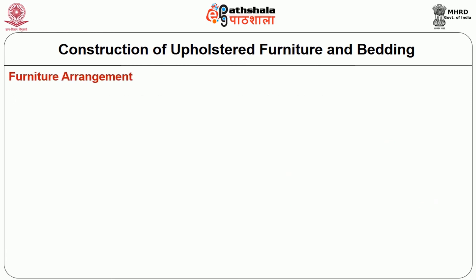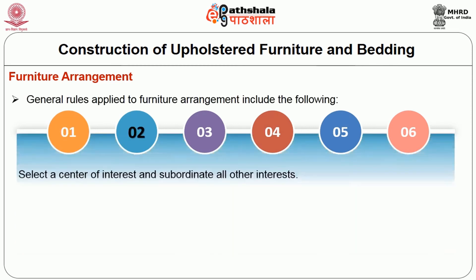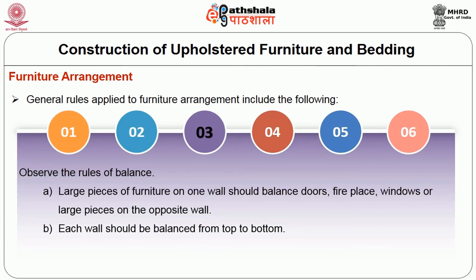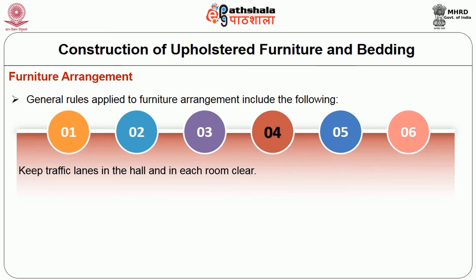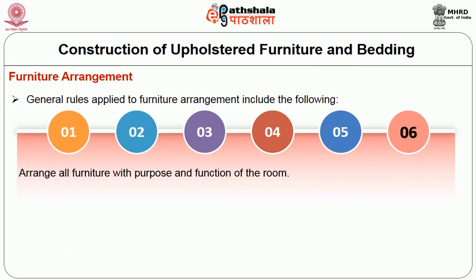General rules for furniture arrangement: Select furniture in proportion to the room and to the family using it. Place large pieces on large wall areas and small pieces on small wall areas, parallel to the structural lines of the room. Select a centre of interest and subordinate all other interests. Observe the rules of balance — large pieces on one wall should balance doors, fireplace, windows or large pieces on the opposite wall, and each wall should be balanced from top to bottom. Keep traffic lanes in the hall and in each room clear. Avoid using too many furniture pieces in a room; all furniture should not hug the wall but also should not occupy the centre floor area. Scatter upholstered pieces among wooden pieces. Arrange all furniture with the purpose and function of the room in mind.